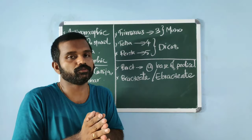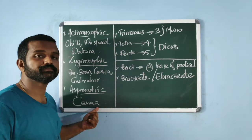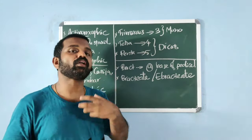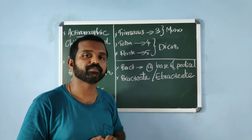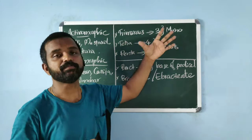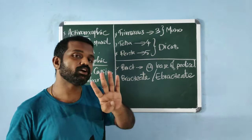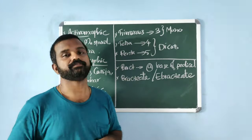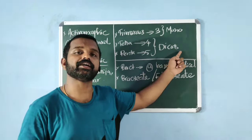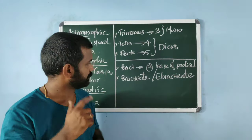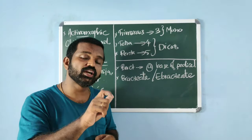Asymmetric flowers cannot be divided into two equal halves — Canna is a typical example. Trimerous: if the floral appendages are three or multiples of three, the flower is trimerous — seen in monocots. Tetramerous means four appendages, pentamerous means five; these two conditions are usually seen in dicots.